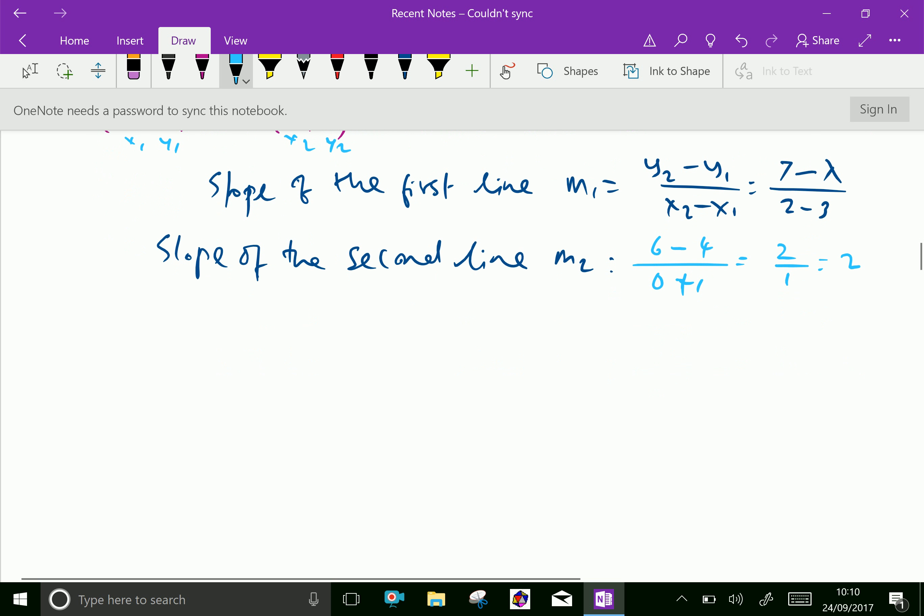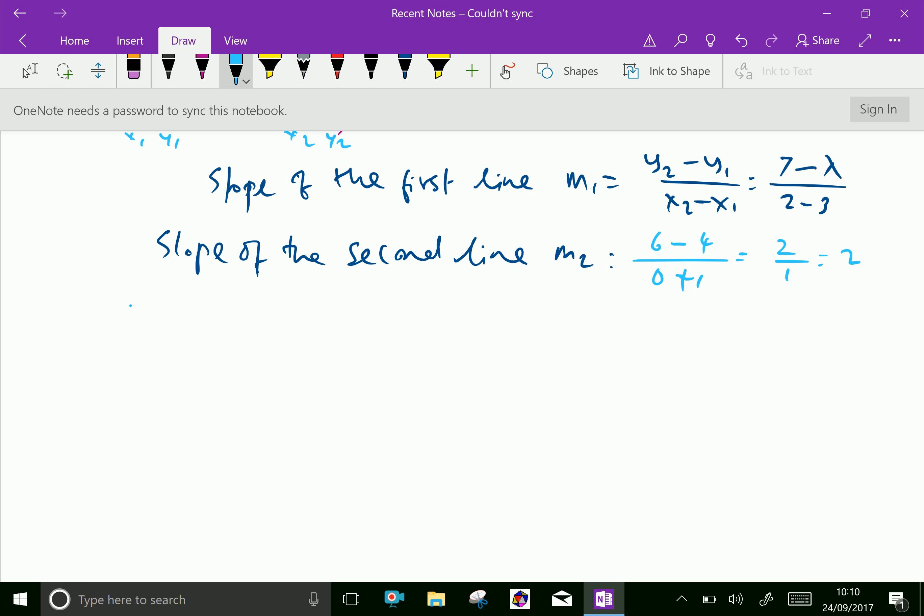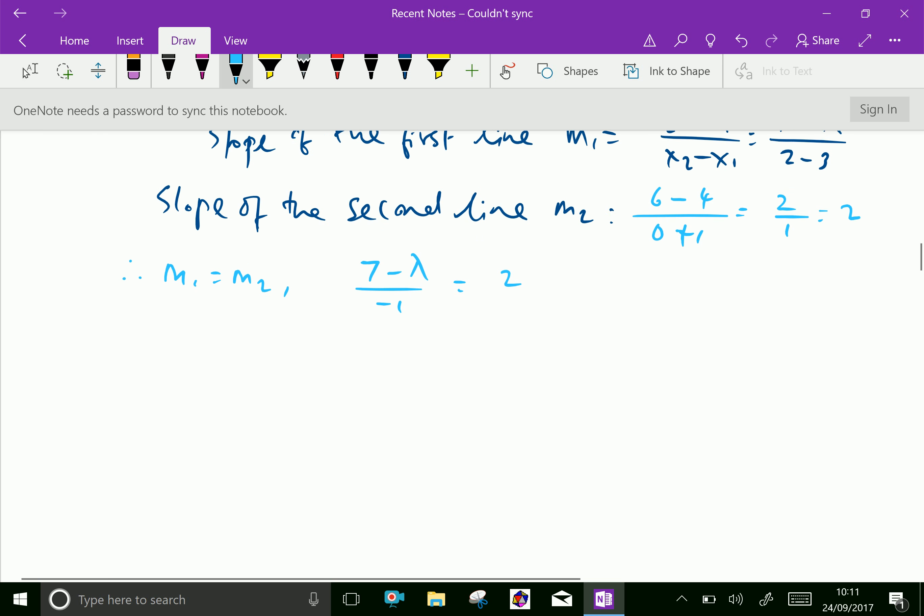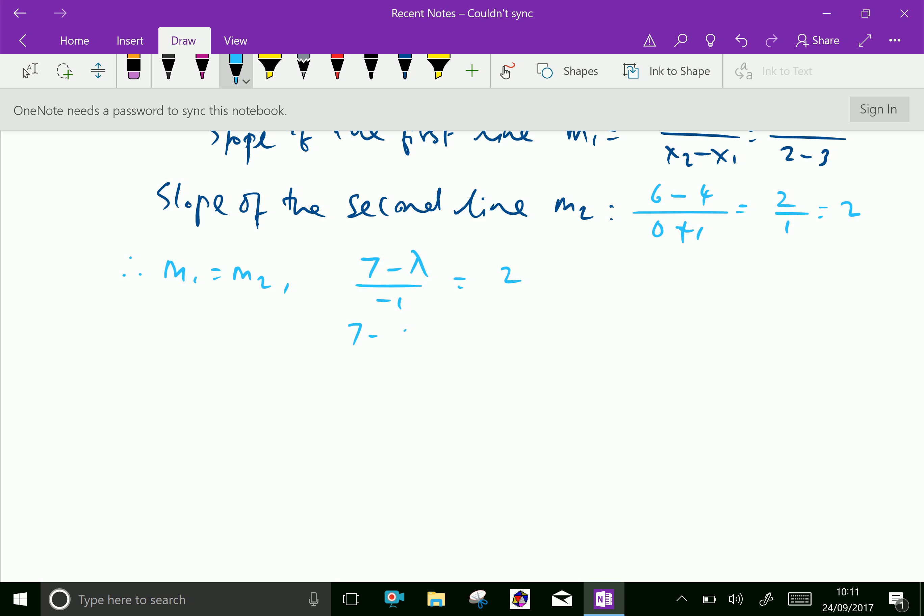Since both lines are parallel, m1 equals m2. Therefore, 7 minus lambda over -1 equals 2. By cross multiplying, 7 minus lambda equals 2 times -1, which is -2. Then lambda equals 7 plus 2, lambda equals 9.